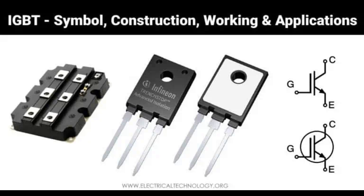Electric vehicles (EVs) — inverters and power control units: IGBTs are critical in EV powertrains, where they are used in inverters to convert DC from the battery into AC to drive the motor. They are also used in power control units (PCUs) to manage energy flow between the battery and the electric motor, improving efficiency and extending driving range. Charging systems — IGBTs are used in high-power EV charging stations to efficiently convert AC grid power to DC for fast battery charging.